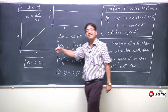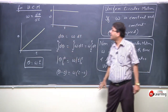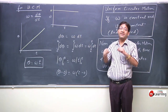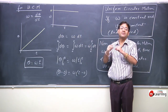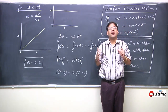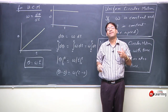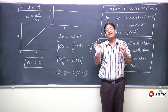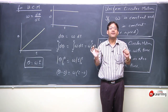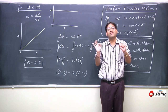Initially zero, so angular displacement linearly increases. Omega is constant and linear speed is constant — this is Uniform Circular Motion.